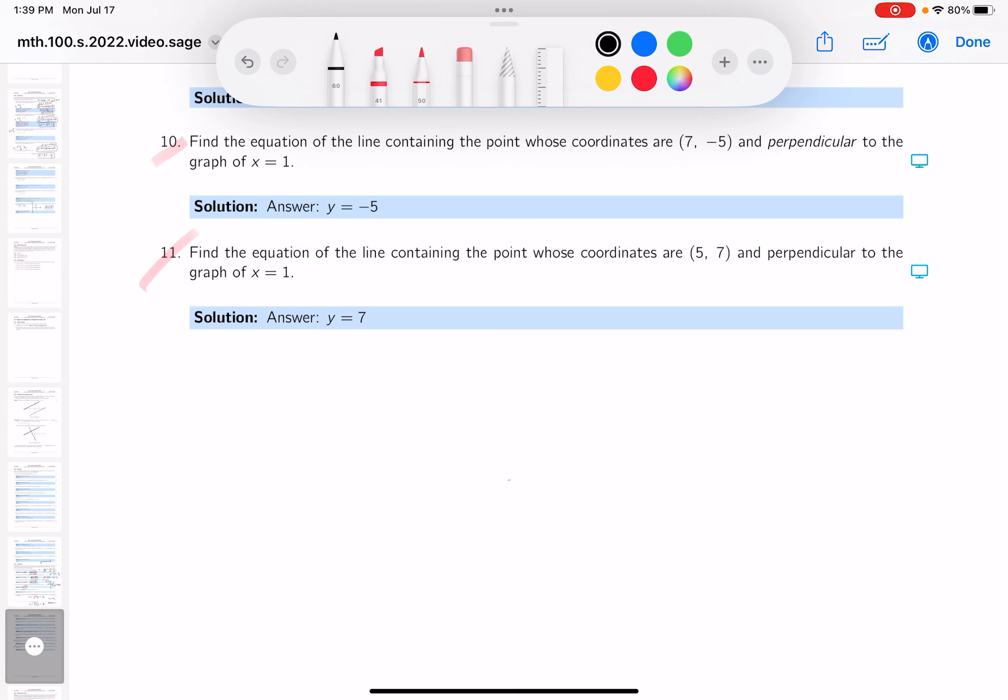What do I know? It's perpendicular to the line x equals 1, and it goes through the point 5, 7. So what's the equation of line going to be? It's going to be a horizontal line, which could be y equals, well, what is it going to be equal to 7?